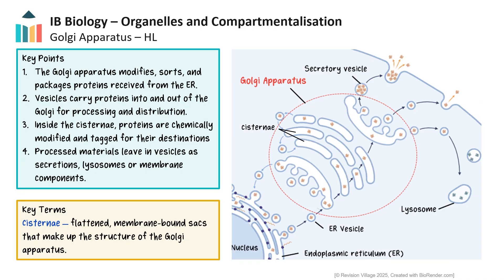After proteins are made on ribosomes attached to the rough ER, they are sent to the Golgi apparatus — think of the Golgi as the cell's mail room. Inside the Golgi, proteins are modified, sorted and packaged. This can include adding sugars to form glycoproteins, or tagging them for delivery to the right destination. Once the proteins are ready, the Golgi packages them into vesicles. Some vesicles carry proteins to the cell membrane for secretion, whilst others deliver them to places inside the cell like lysosomes. So the Golgi apparatus plays a key role in processing and directing proteins to where they are needed, either inside or outside the cell.